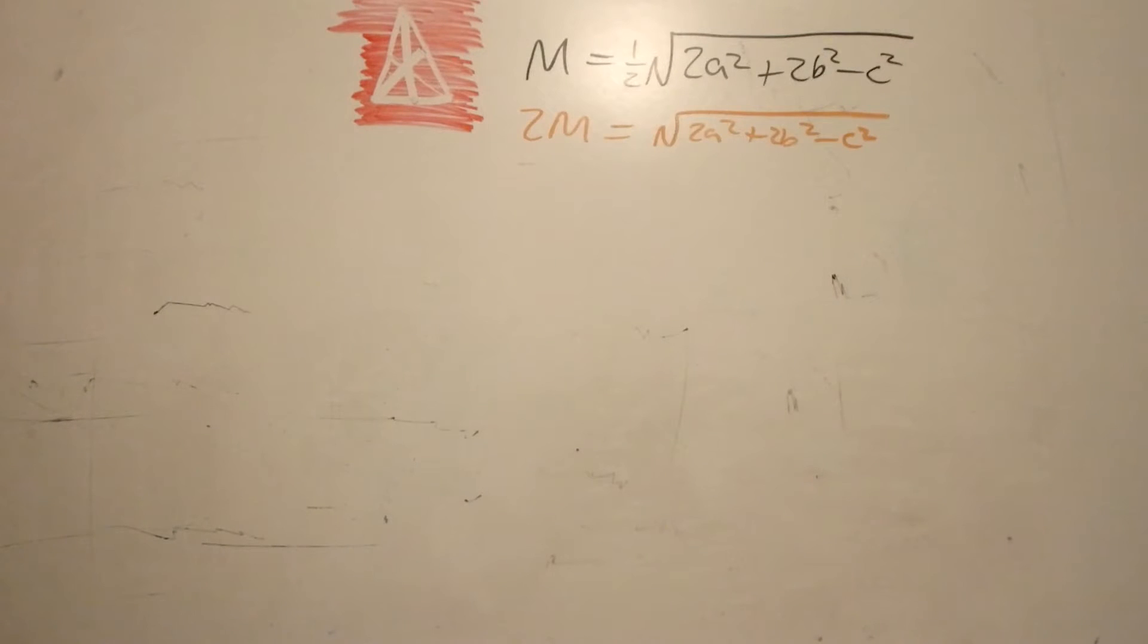So at this point, I multiply both sides by 2. I think you can get it simplified here. And then we can square both sides. So now down below, I wrote down formulas for the other two medians, and we can just start adding these all together.